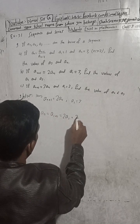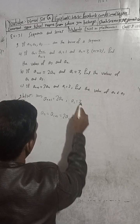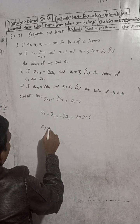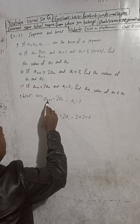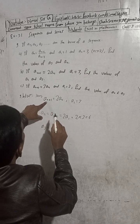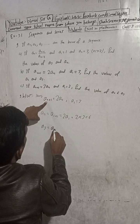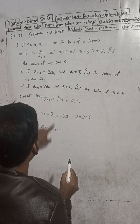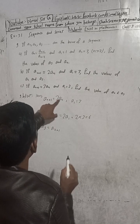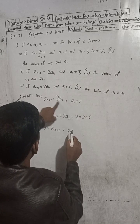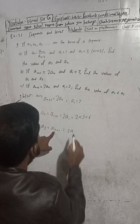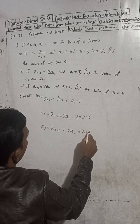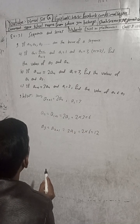To find a3, we put n equal to 2 in the formula. So a_(2+1) equals 2 times a2, meaning a3 equals 2 times a2. a2 value is 6, so a3 equals 2 times 6 equals 12. We need to find a2 and a3.